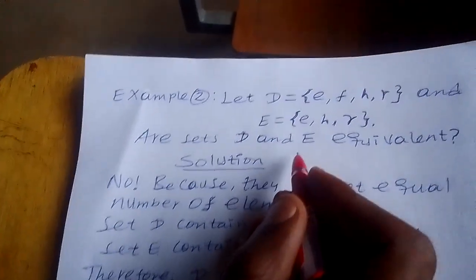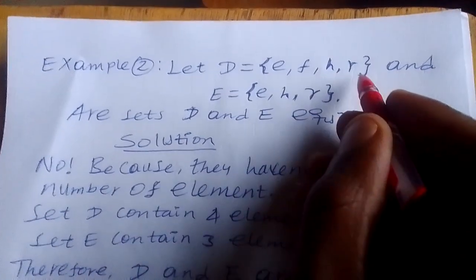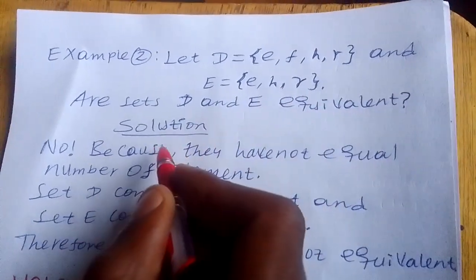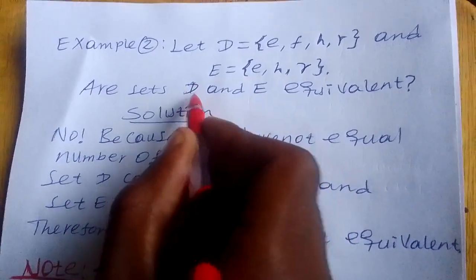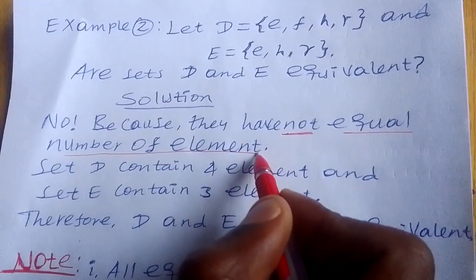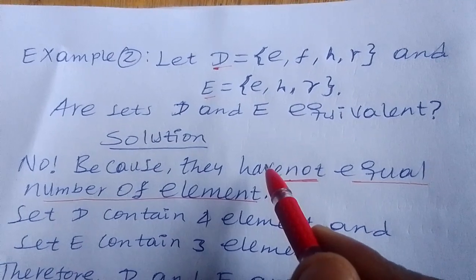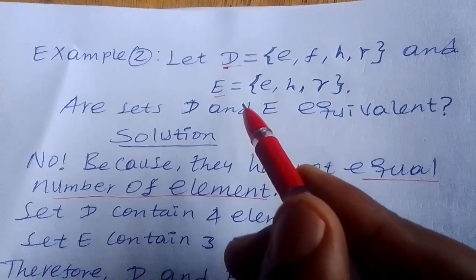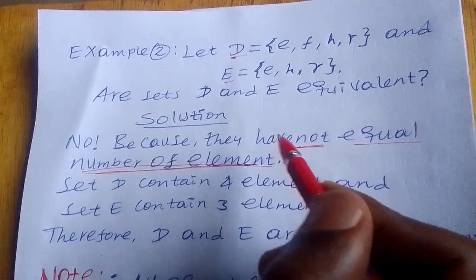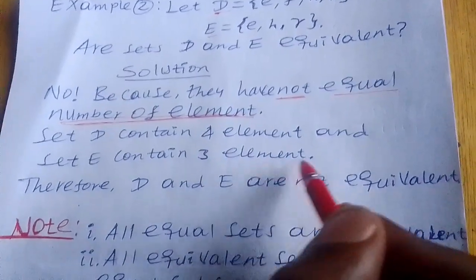Example two: Let set D equal to {a, f, h, r} and set E equal to {e, h, r}. Are sets D and E equivalent? Solution: No, both set D and set E are not equivalent because they have no equal number of elements. Set D contains four elements and set E contains three elements.